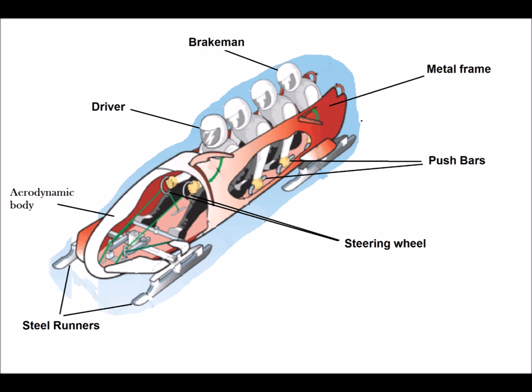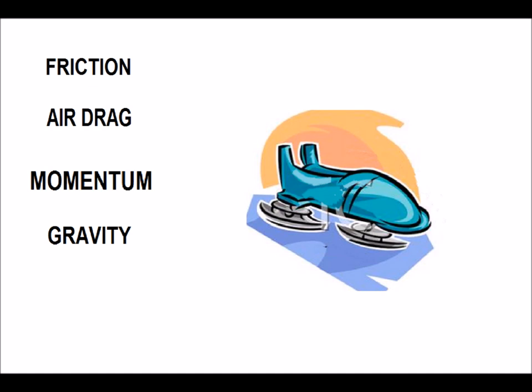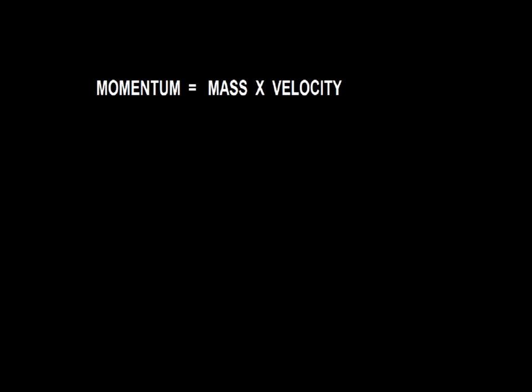Other factors which can affect the speed of a sled are friction, air drag, momentum, and gravity. Air passing around the bobsled creates air drag, which causes the sled to slow down. Bobsleds are designed to be as aerodynamic as possible to cut down on drag. An object's momentum is its mass times its velocity — the more momentum it has, the harder it is to stop.